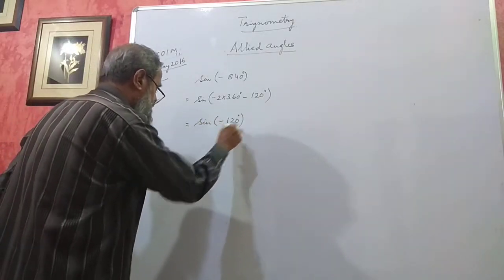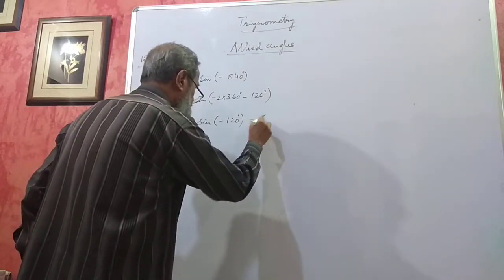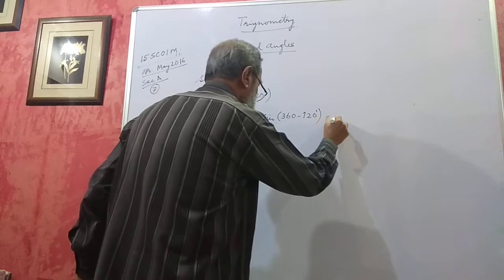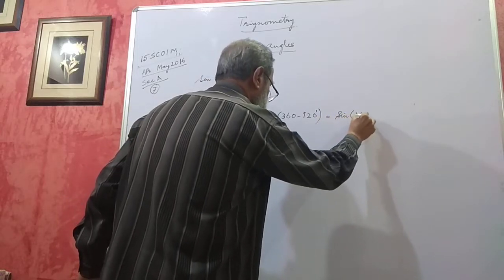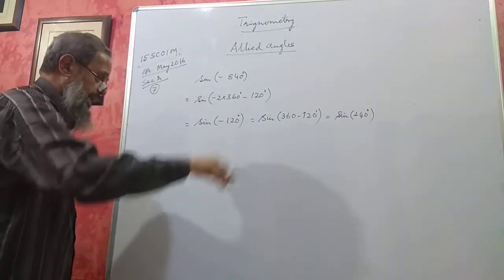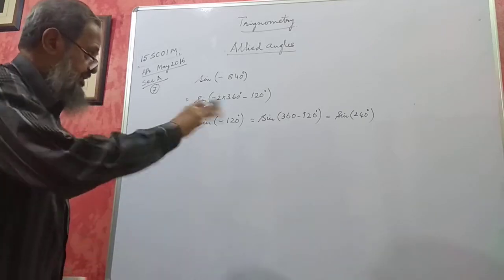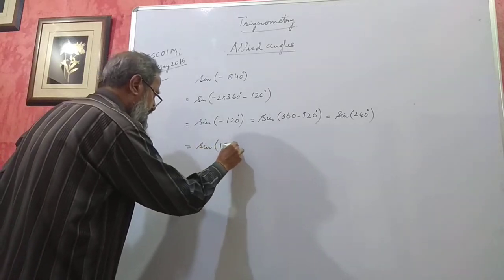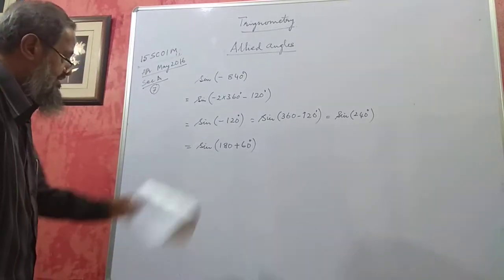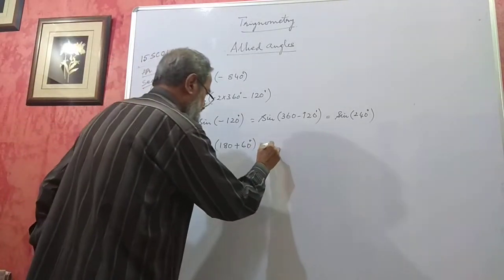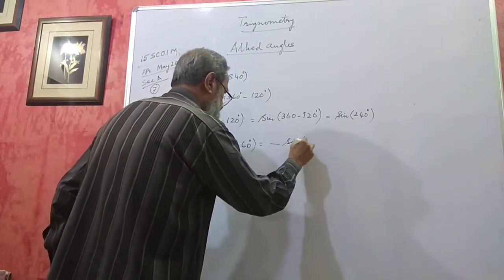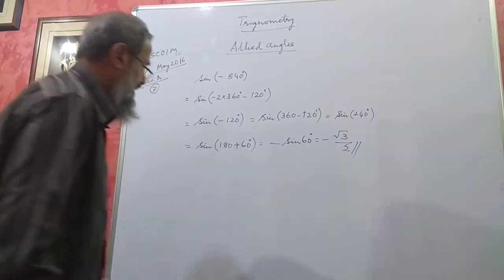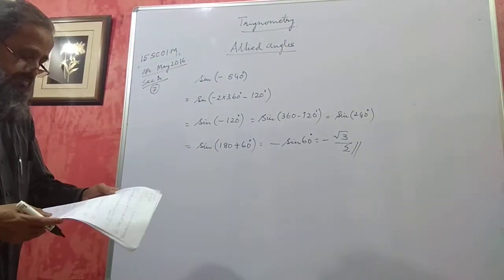Sin(−120°) can be written as sin(360° − 120°) = sin(240°). Minus 120 is the same as plus 240 — if you go from the other side it is plus 240. Now, sin(240°) = sin(180° + 60°), which is third quadrant where sine is negative, so it becomes minus sin 60 = −√3/2. That is the value of sin(−840°). Three marks for that.